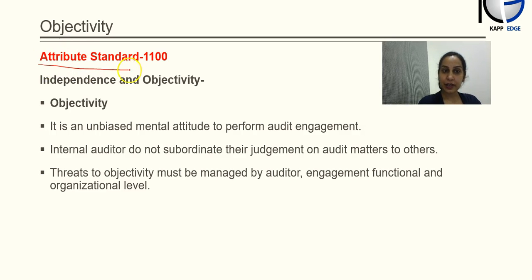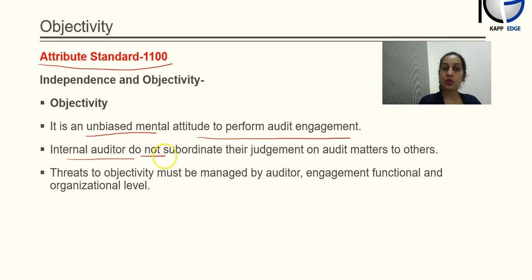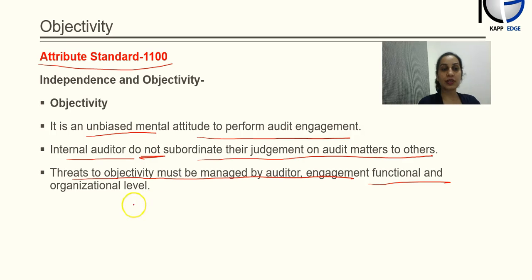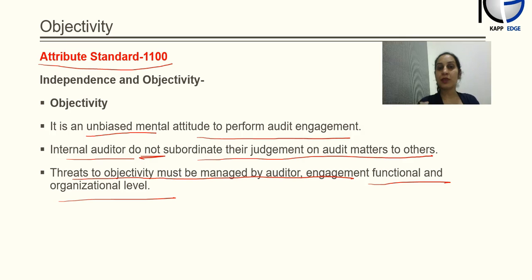As defined in Attribute Standard 1100, objectivity is an unbiased mental attitude to perform audit engagements, and internal auditors do not subordinate their judgment on audit matters to others. That means whenever auditors need to form their opinion, they will form it freely without subordinating it to someone else. Threats to objectivity must be managed by the auditor at the engagement, functional, and organizational level. For example, if certain employees refuse to give information to the auditor or restrict access to certain information, all these things need to be discussed.